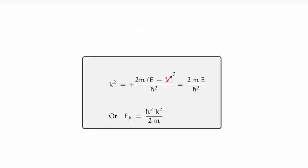So within the well, we can rewrite our constant k squared as twice m e over h bar squared.